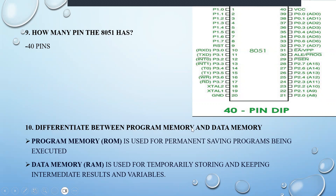What is the difference between program memory and data memory? Program memory is what we call ROM — read-only memory — used for permanent saving of programs. Even if there is a power switch-off, it will be permanently saved in the system. Data memory is what we call RAM — random access memory — used for temporary storing. It gives you intermediate results and variables whenever you require.